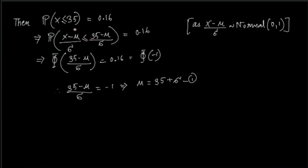This is nothing but the CDF of Z, and this is the value at which we want to evaluate that function. So this is Φ((35 - μ)/σ) which equals 0.16.